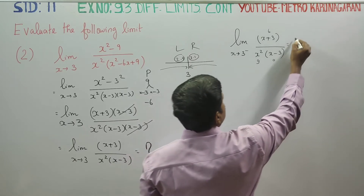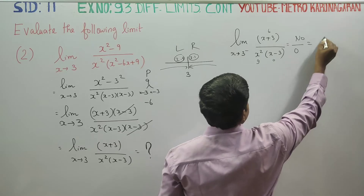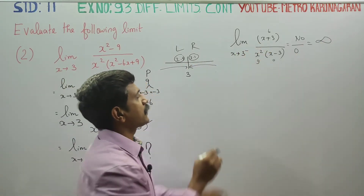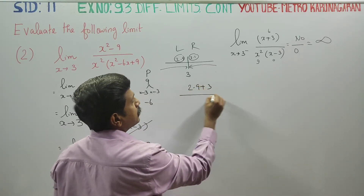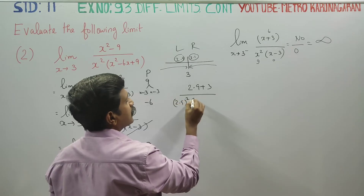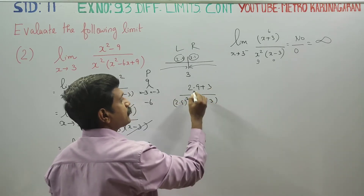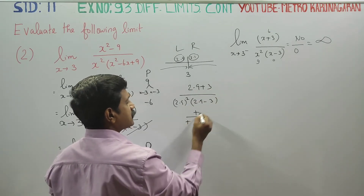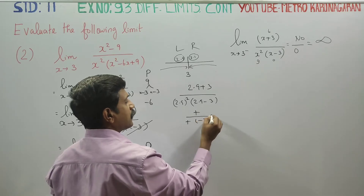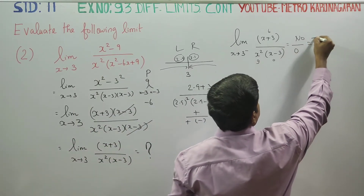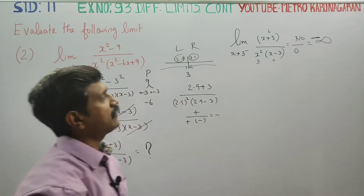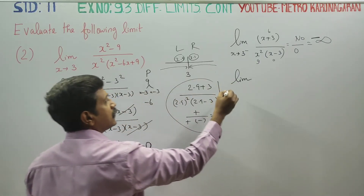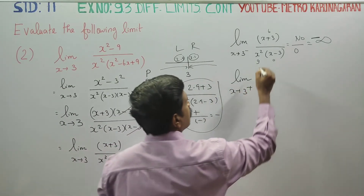9 into 0 is 0, and a number divided by 0 becomes infinity. Substituting x equals 2.9: 2.9 plus 3 is positive, but 2.9 minus 3 is negative, so the result is negative infinity. The left-hand limit is negative infinity.